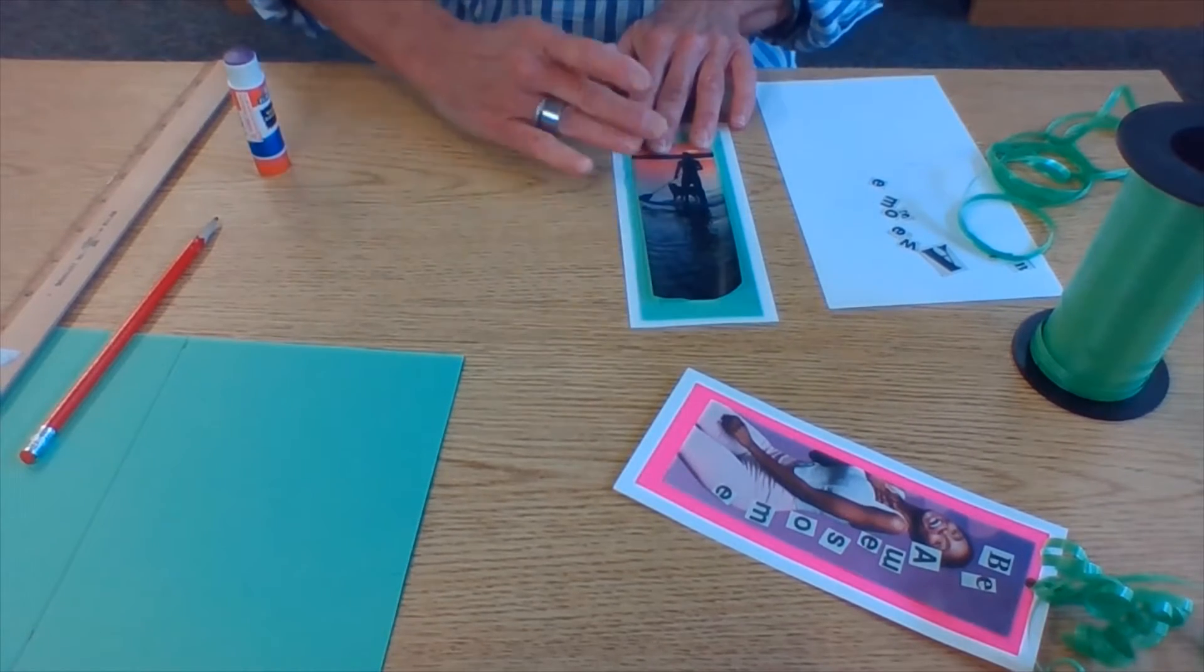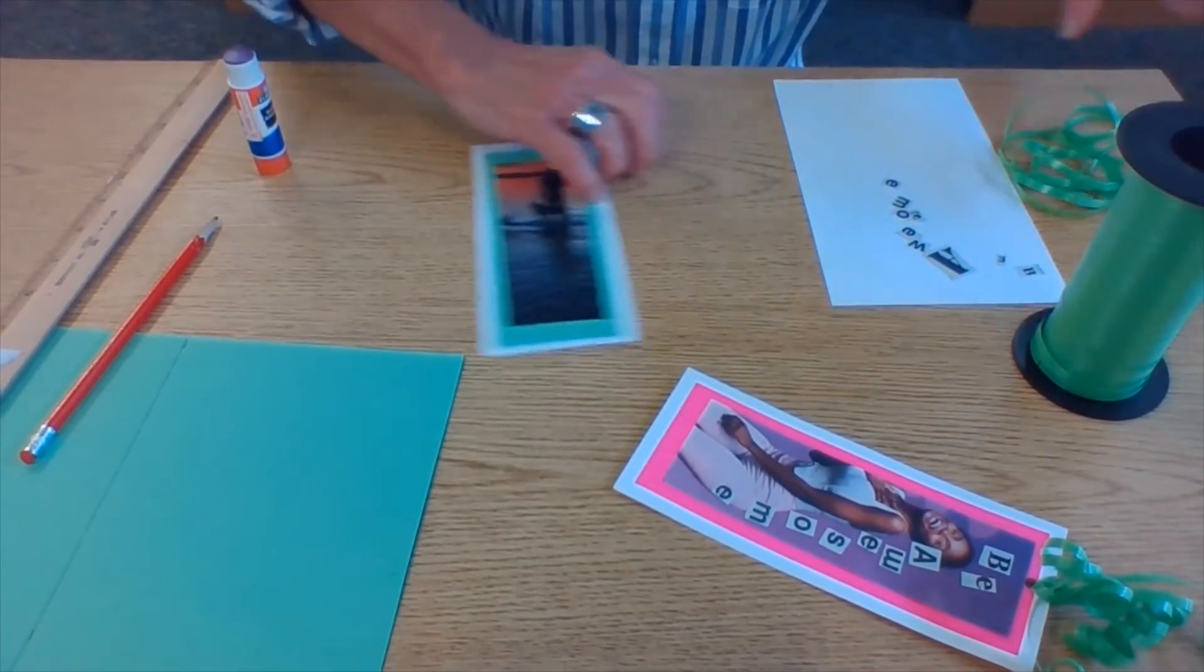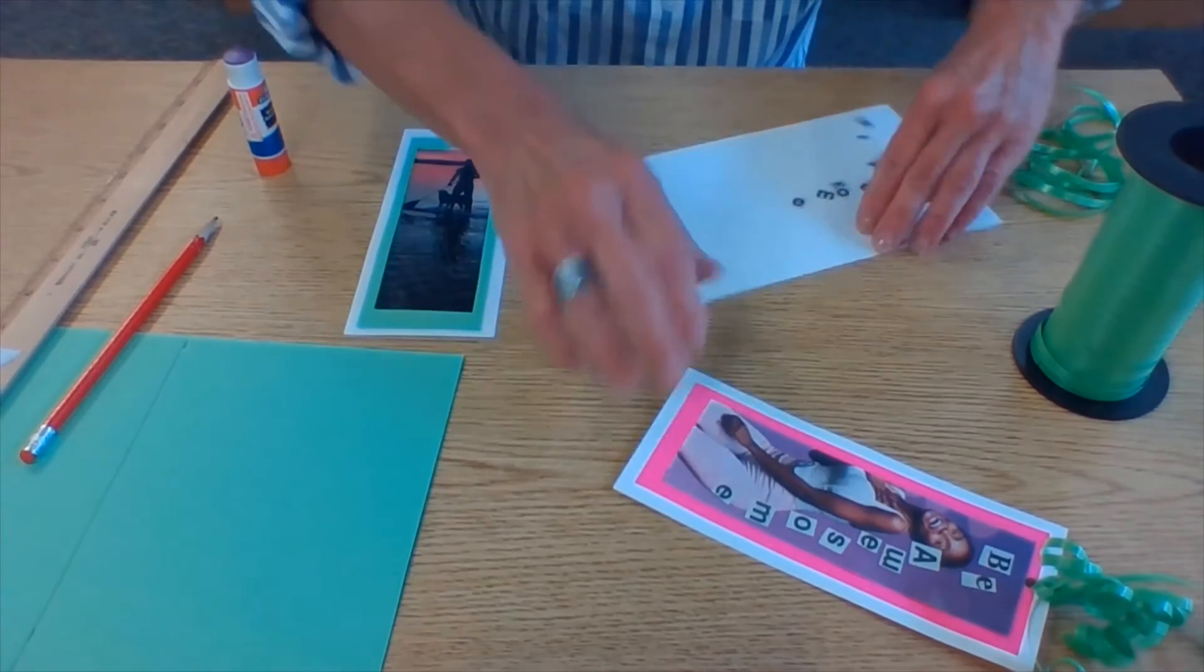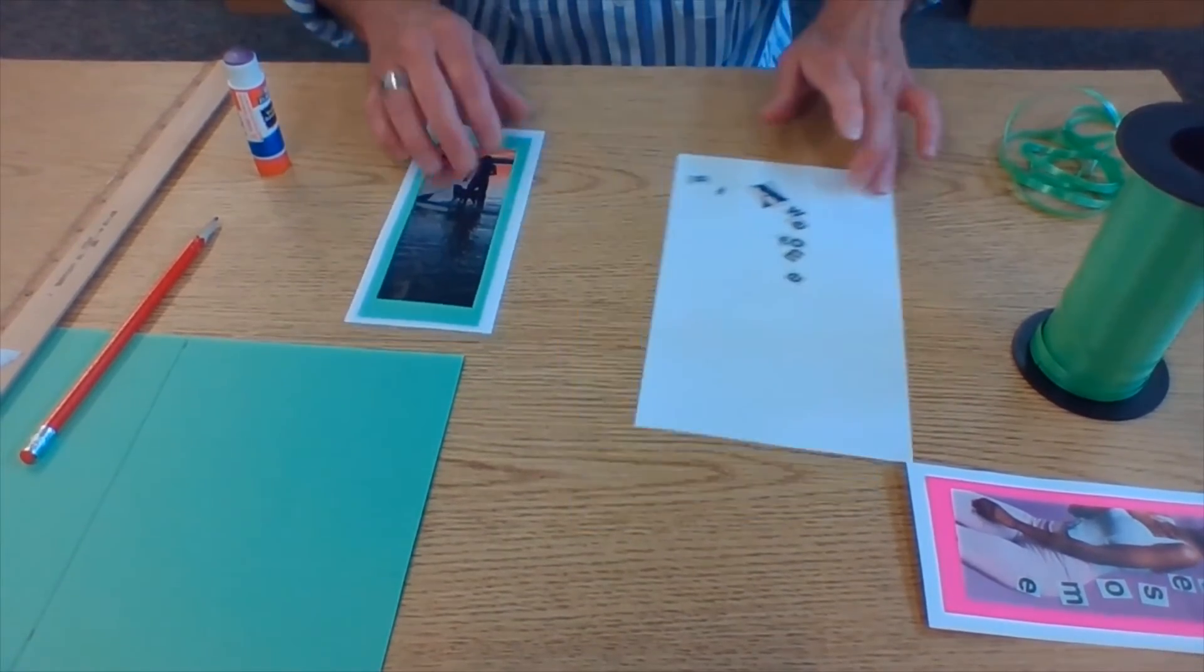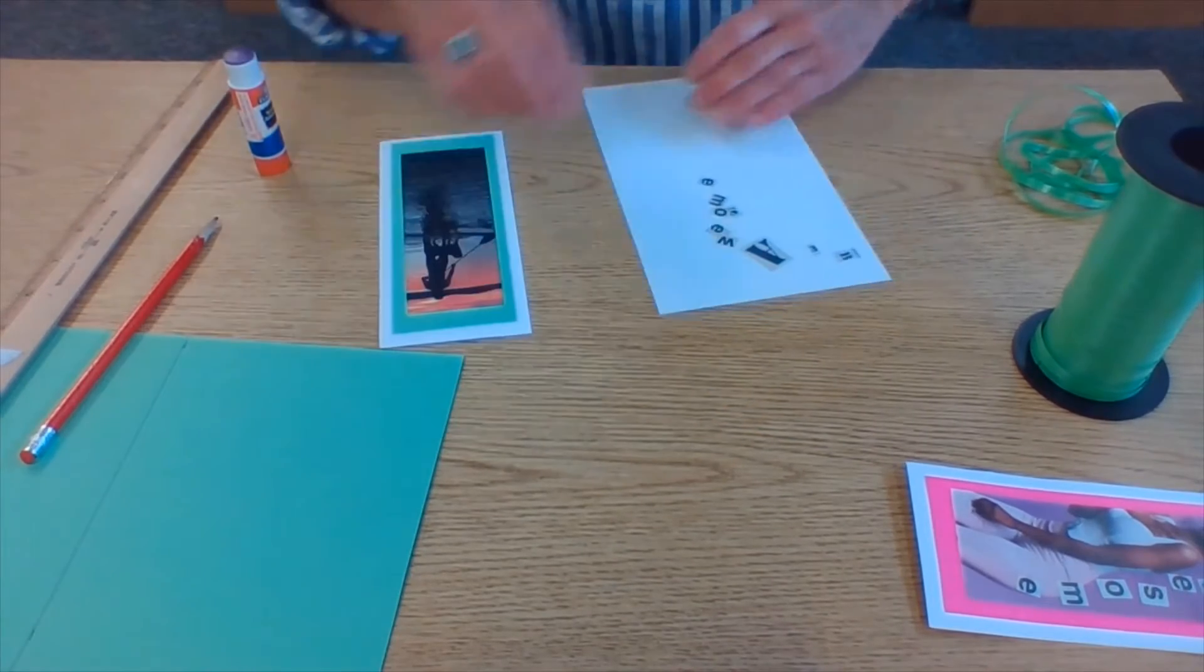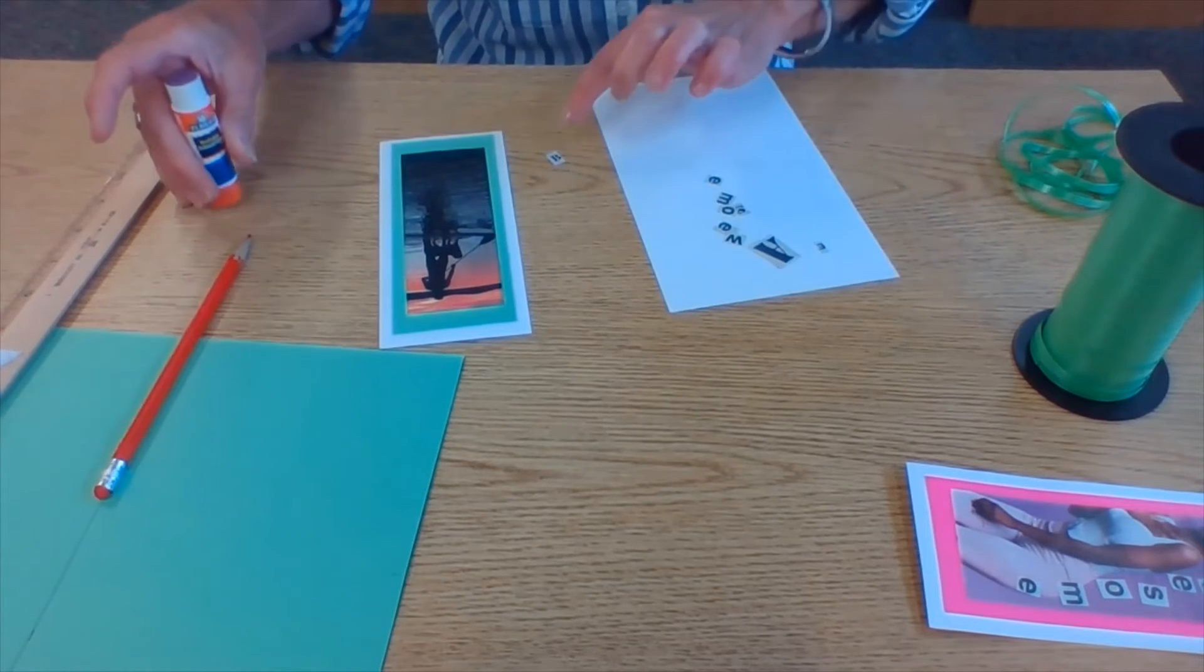Now this part gets a little bit tricky. I've got these letters that I cut out from a newspaper. They're kind of small. So I'm just going to sort of pick it up with my finger. Put a little glue on it.